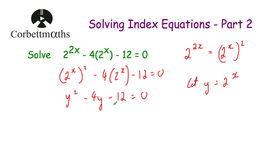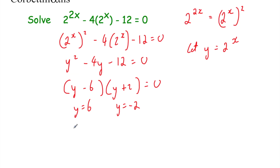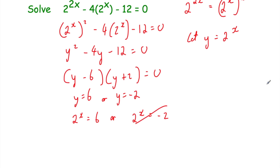Instead of 2 to the power of x I'm going to write y, giving us y squared subtract 4y subtract 12 equals zero. This is a quadratic equation — let's factorize it. We get two brackets with y's at the front of both. We're looking for two numbers that multiply to give minus 12 and add to give minus 4, so minus 6 and plus 2. That gives us y equals 6 or y equals negative 2. Now 2 to the power of x can't give a negative answer, so that solution can't exist.